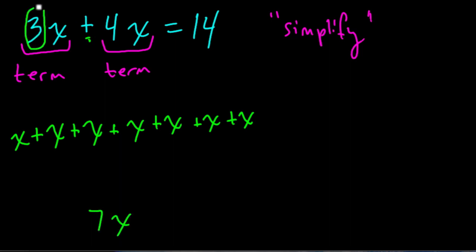In this case 3 and 4, which is 7, and leave the variables intact. So 3x and 4x is 7x, and that equals 14. And now we've got a problem like before.